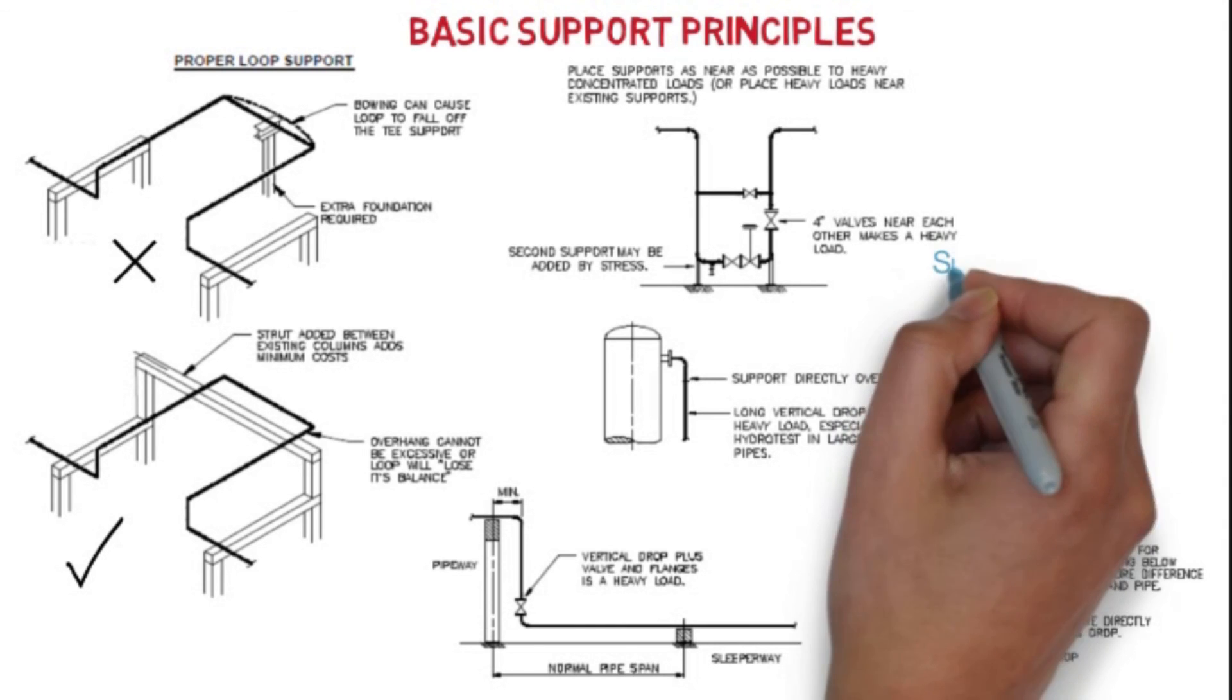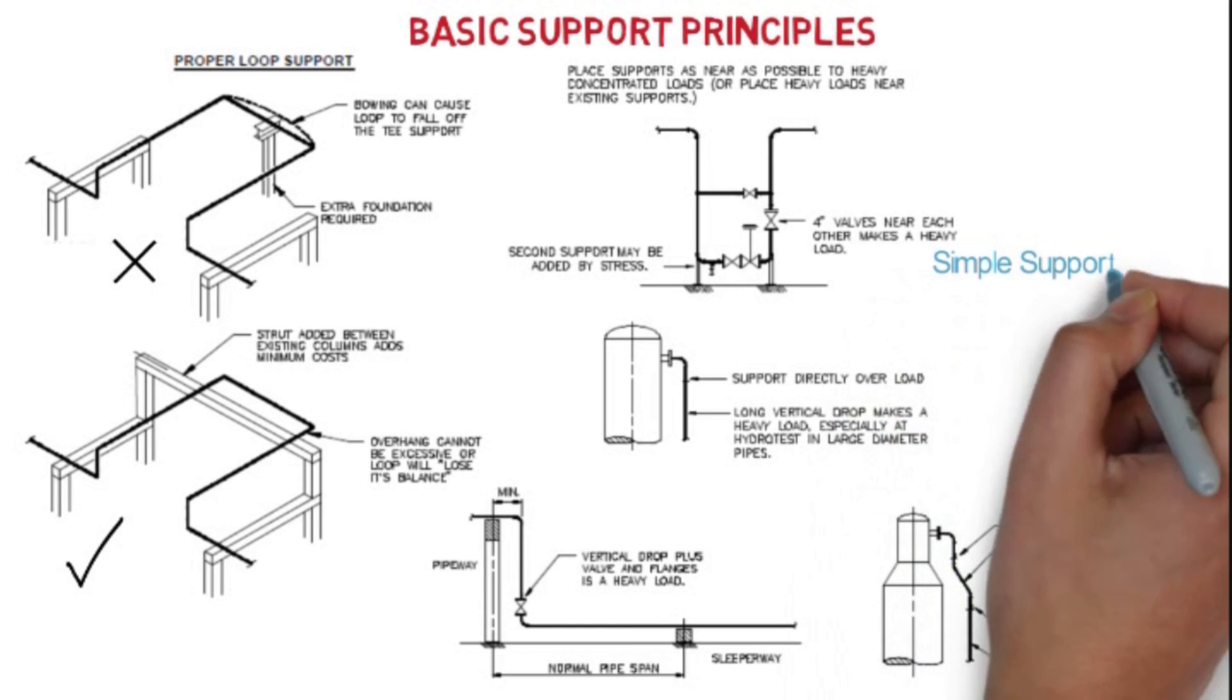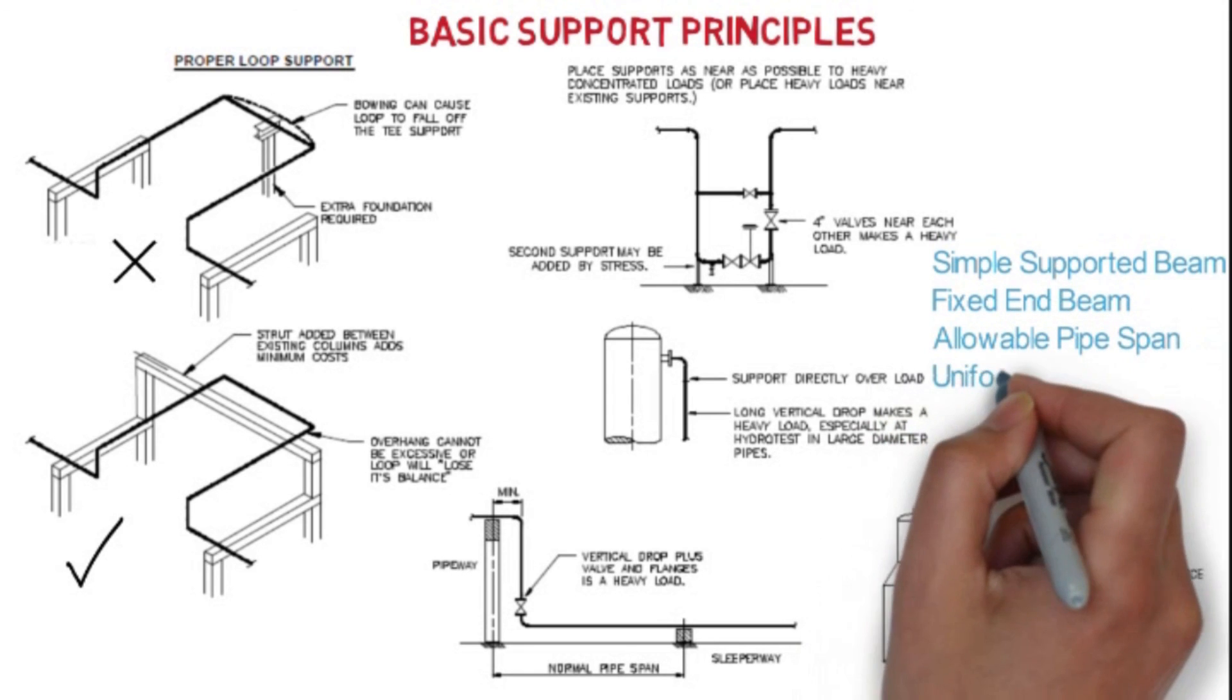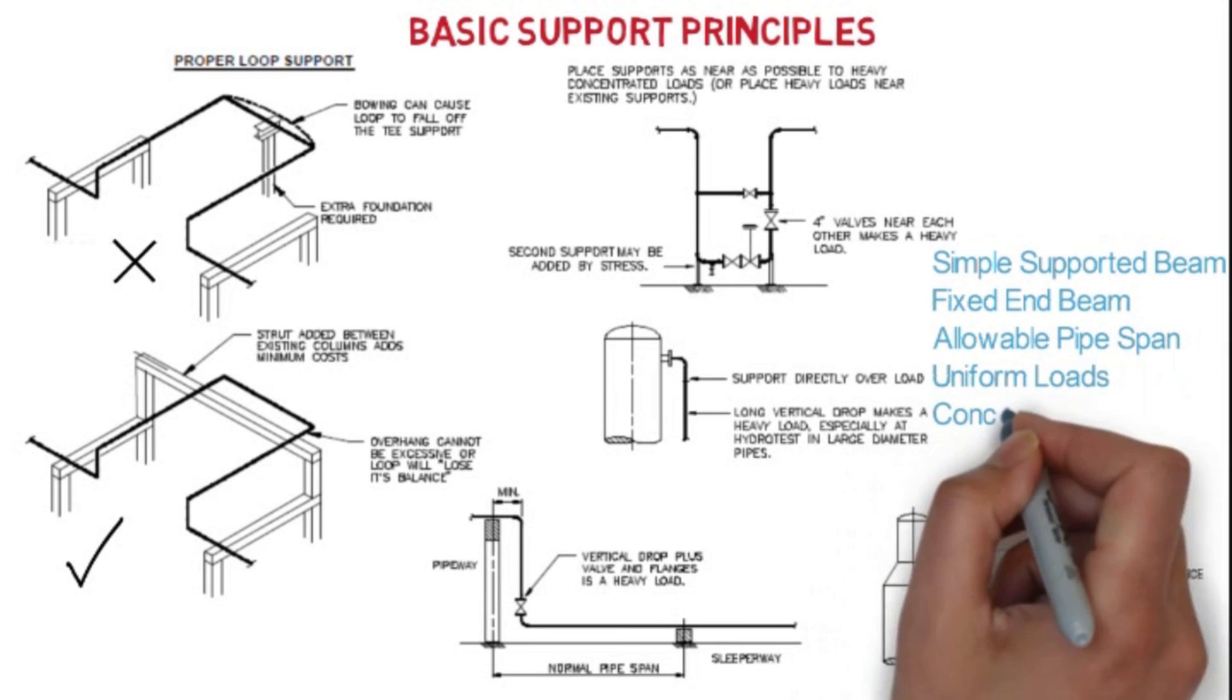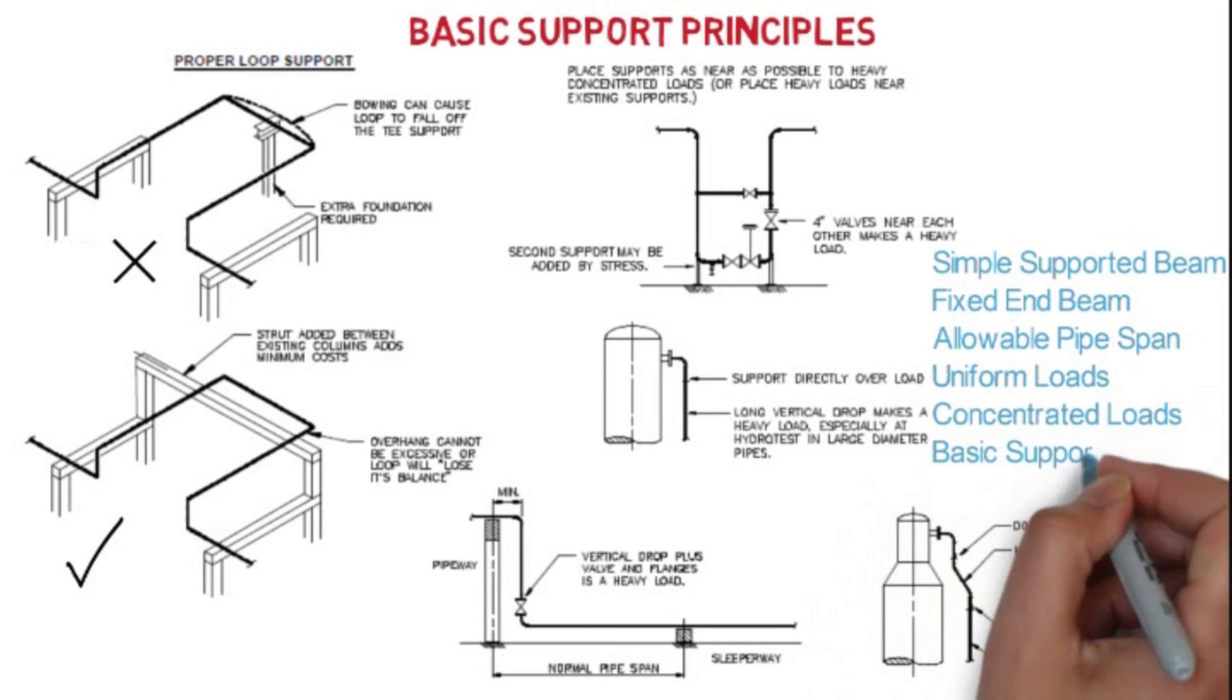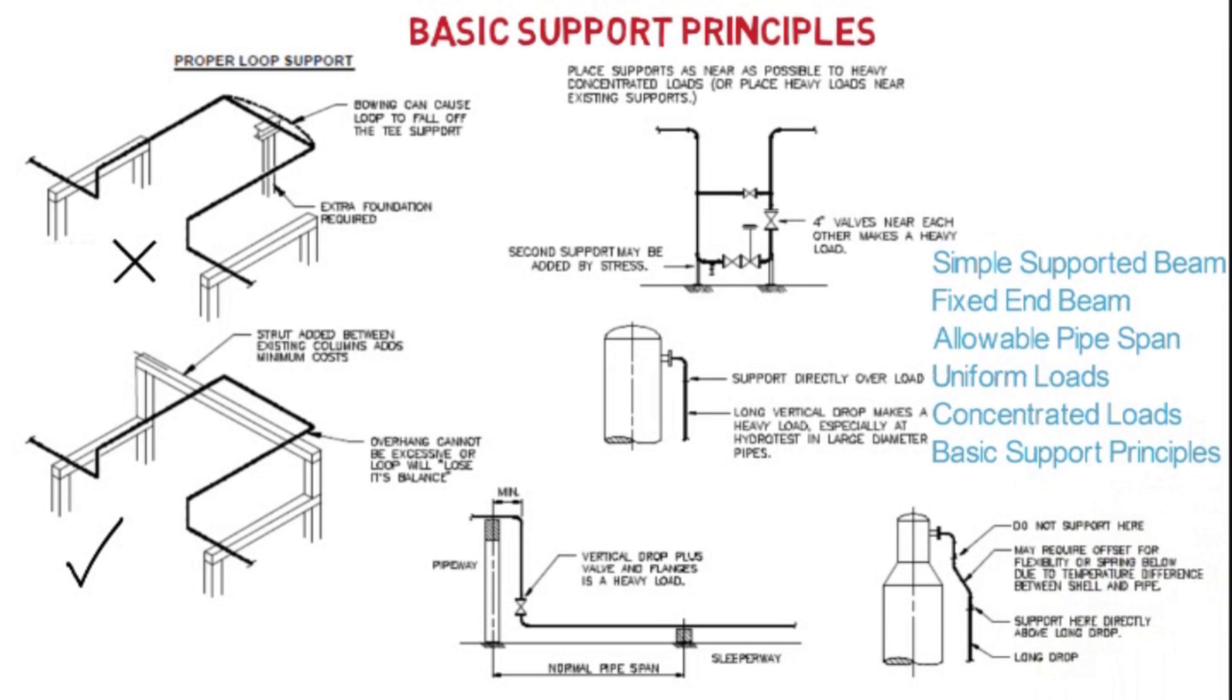So in this video, what we have learned: we have learned what is simple supported beam and fixed end beam, and what is the allowable pipe span and on which factors it depends. And also we have seen how to calculate the uniform load and also the concentrated load, and some of the basic support principles.